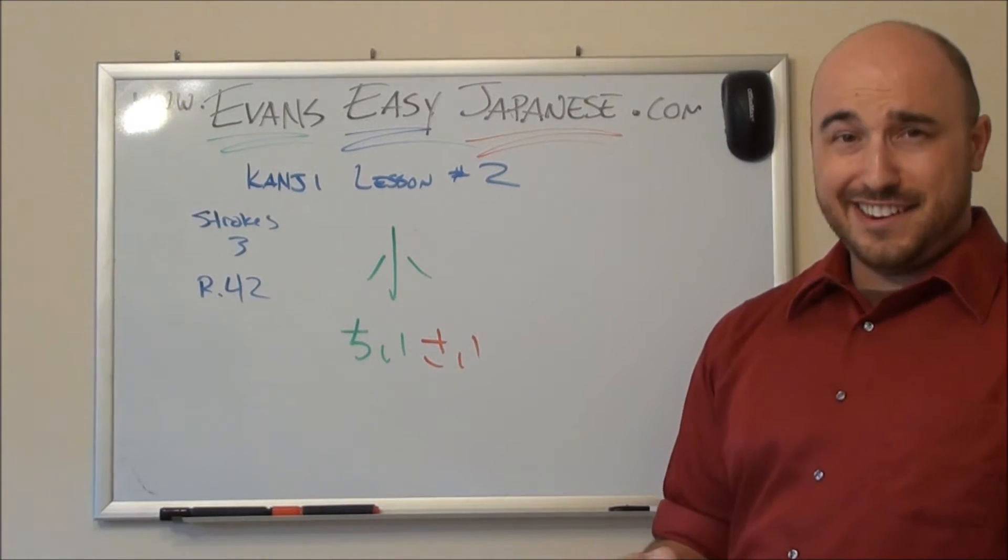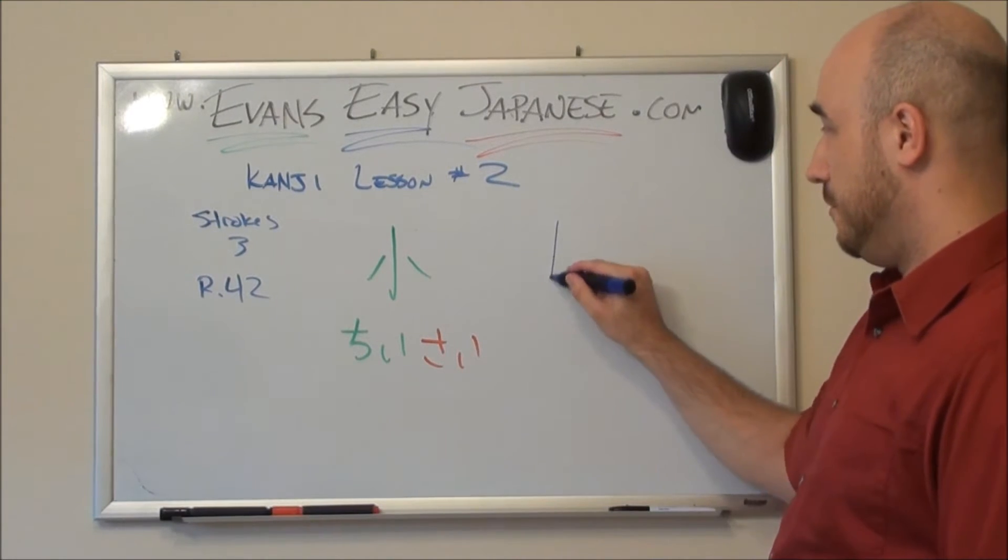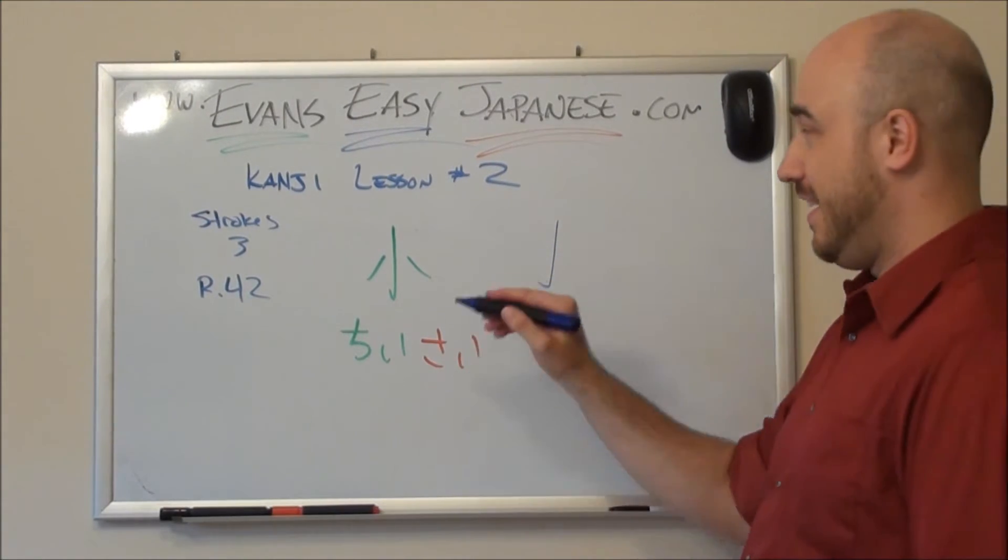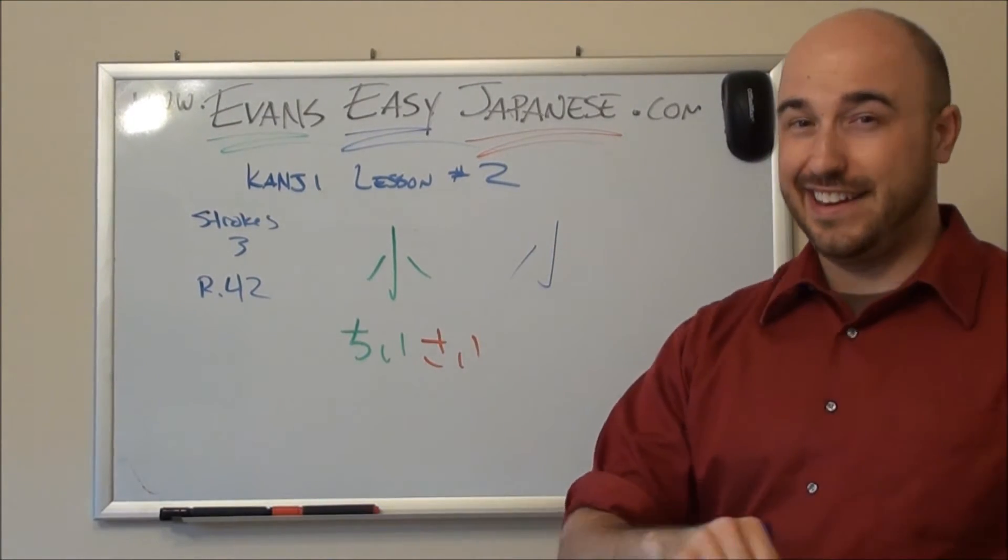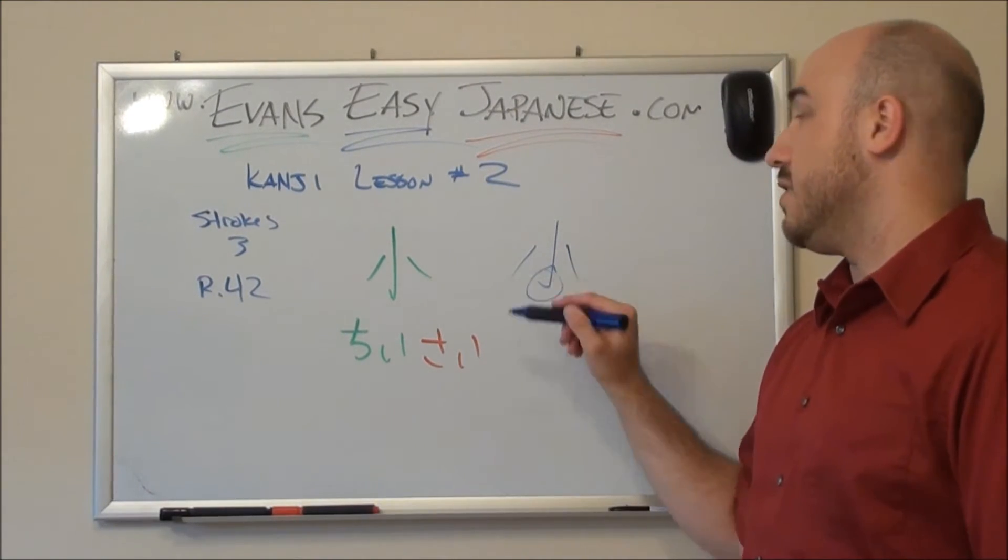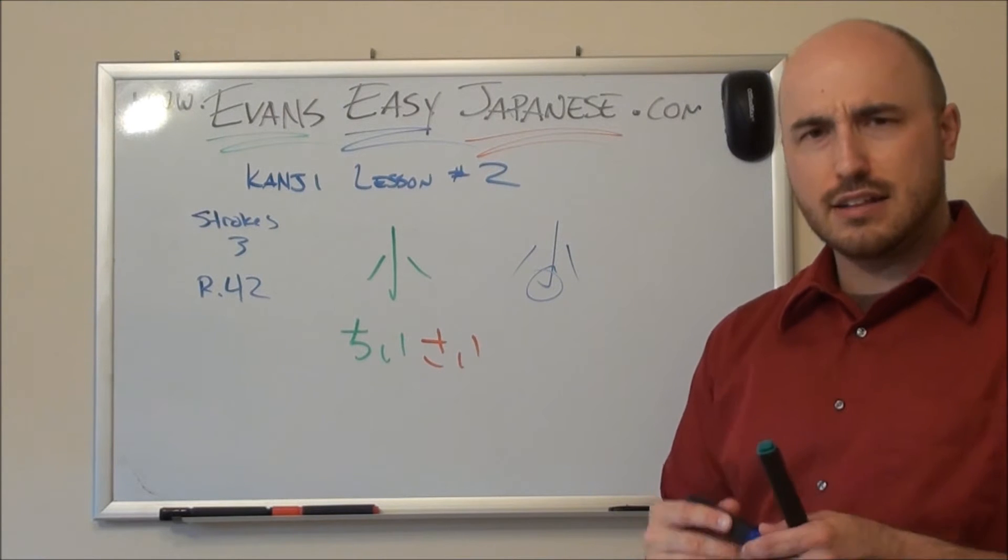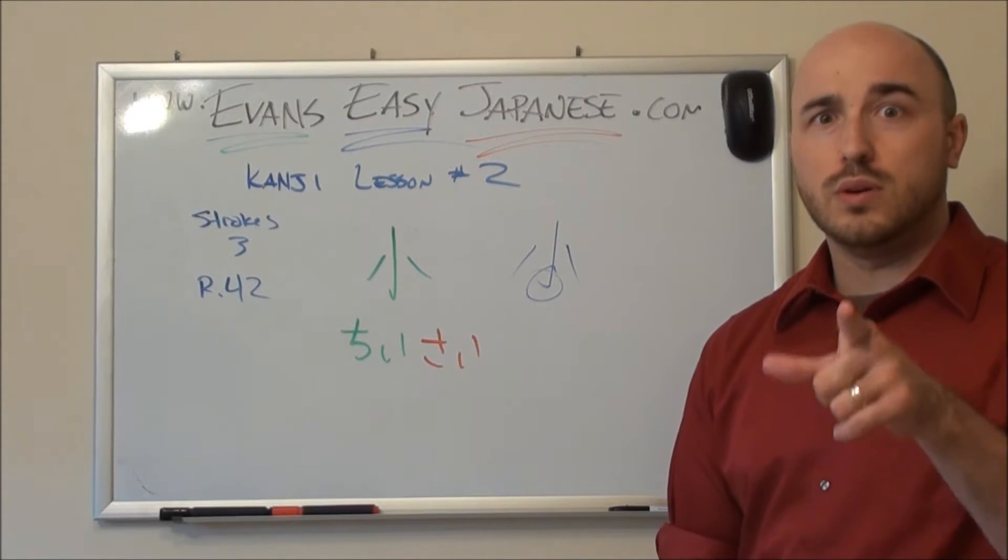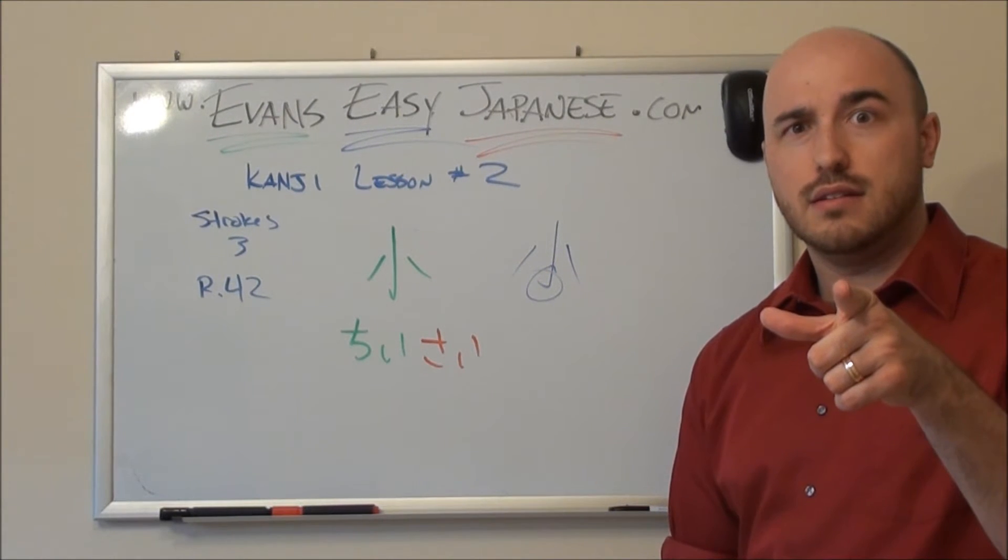Let's draw it together, shall we? One, two, three. Perfect. I want to highlight that hook. Important. Kids get yelled at for not doing that in Japan. Don't get yelled at if you're in Japan.